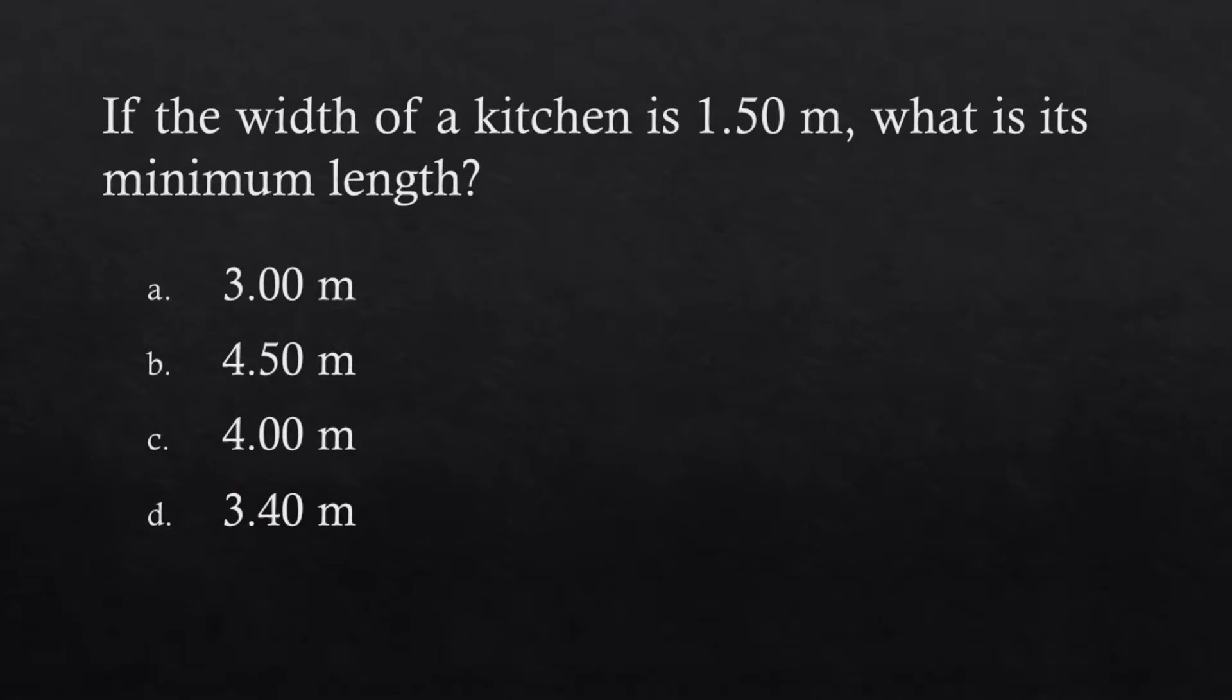If the width of a kitchen is 1.50 m, what is its minimum length? a. 3.00 m, b. 4.50 m, c. 4.00 m, d. 3.40 m. Answer: 3.00 m.